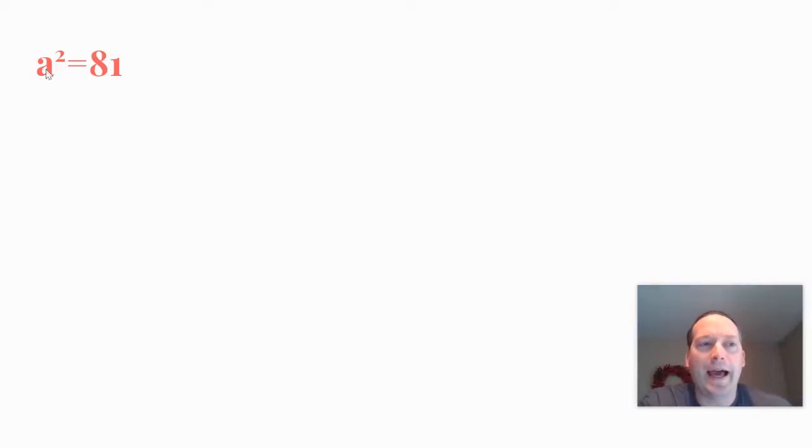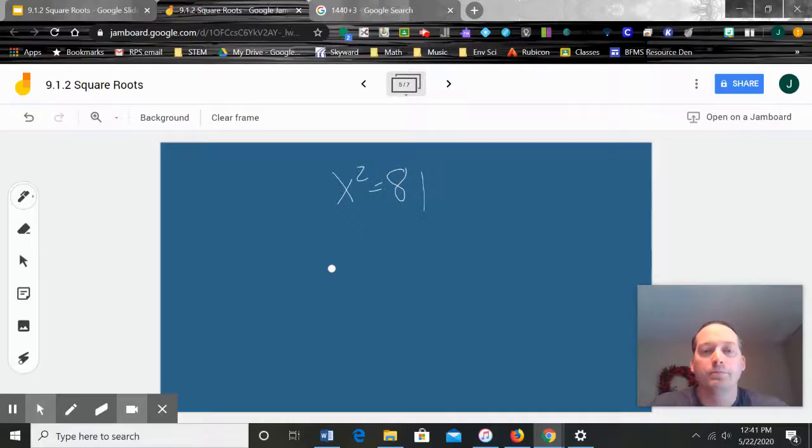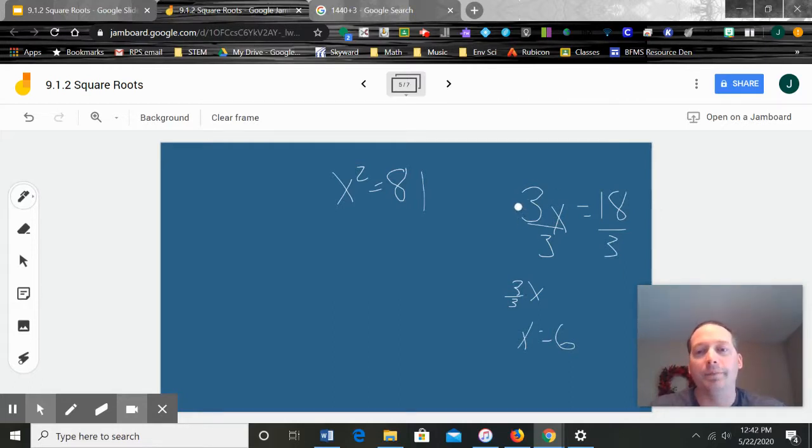So now what we're going to do is take a look at solving a variable that's squared. This is going to be a little bit different than what we've done with solving other variables in the past. So now let's look how to solve x squared equals 81. The way we would solve this is if we had like 3x equals 18, we would divide both by 3. The reason with that is we're trying to get the coefficient here to be 1. So this becomes 3/3 times x, which is just 1x. And then that equals 6.